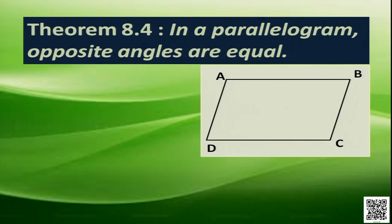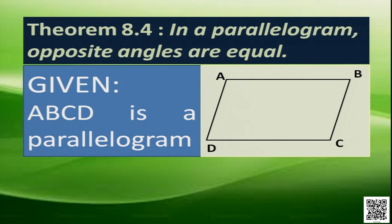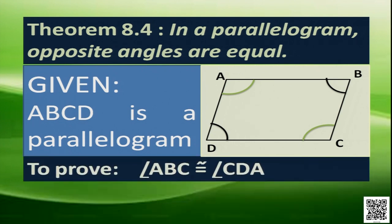Here, ABCD is a parallelogram. Given: ABCD is a parallelogram. We have to prove that opposite angles are equal — that is, angle ABC is equal to angle ADC. These two are opposite angles. Another pair of opposite angles is angle BAD and angle BCD.